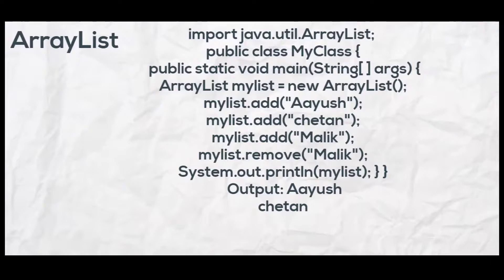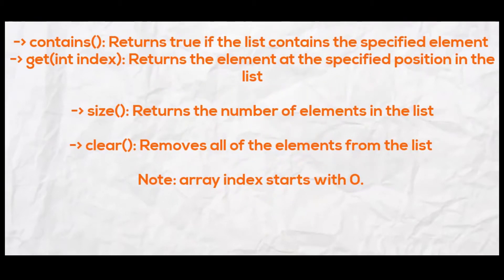You can optionally specify the capacity and the type of object the ArrayList will hold, such as Integer, String, Double, and so on. Our current output contains two names as we have removed the third name using the remove method. These are some of the useful methods of the ArrayList. You can also see the length of the ArrayList.